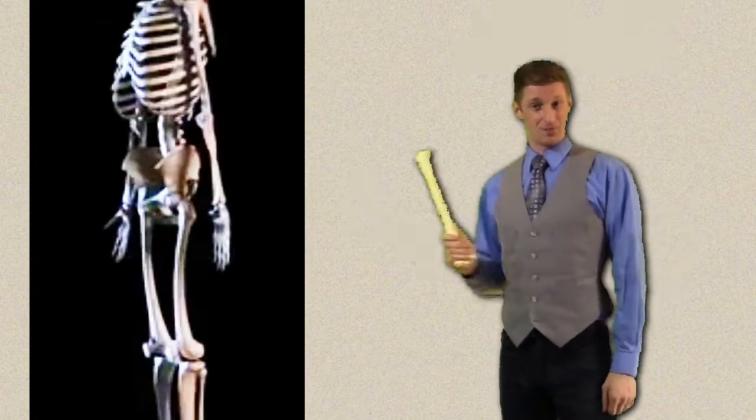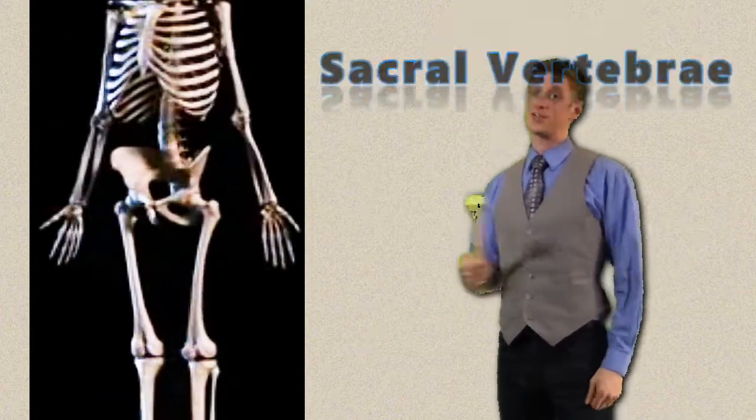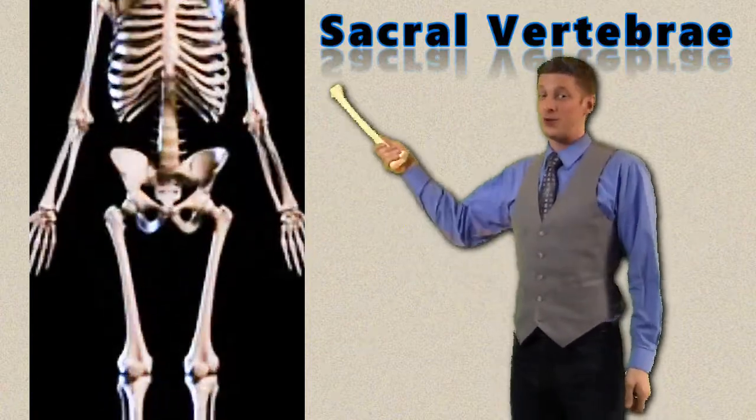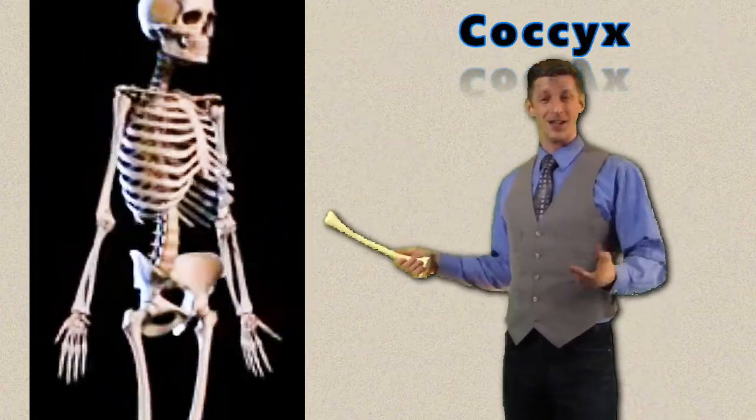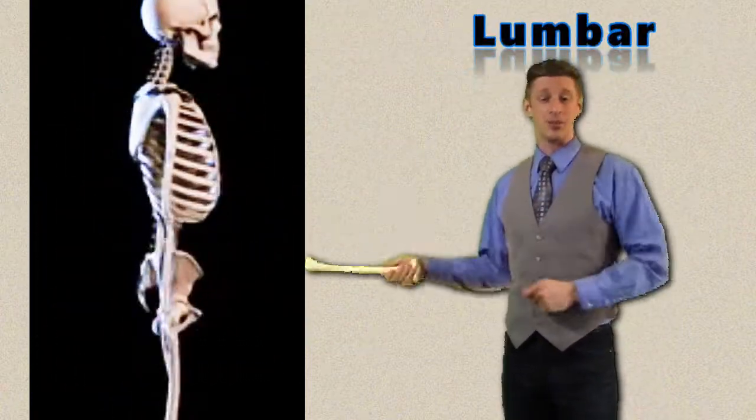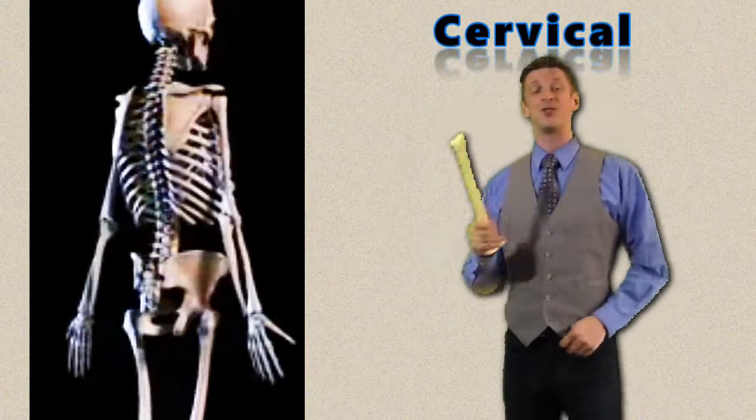Ilium, Ischium, Pubis and Sacrum, Five Sacral Vertebrae Fused. Os Coxae and Coxal, Sternum then Lumbar, Thoracic and Cervical II.